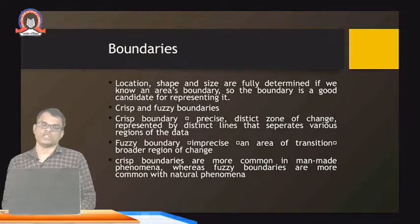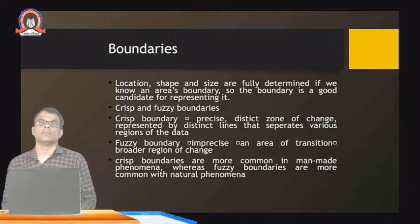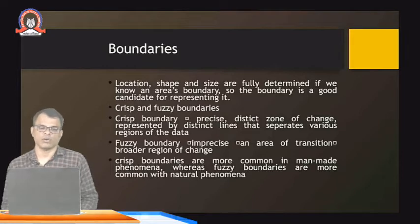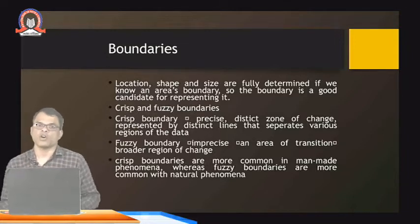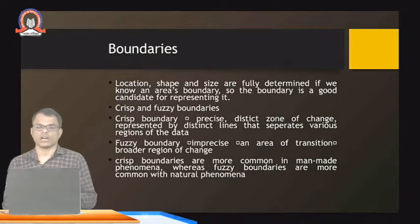Now regarding objects — boundaries are very important. Location, shape, and size are fully determined if we know an area's boundary, so the boundary is a good candidate for representing it. Boundaries are of two types: crisp and fuzzy. Crisp boundaries are fixed — a district or zone of change represented by a distinct line that separates various regions. Fuzzy boundaries imply an area of transition or a region of change.